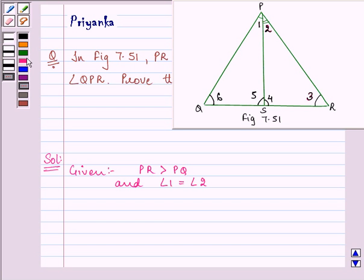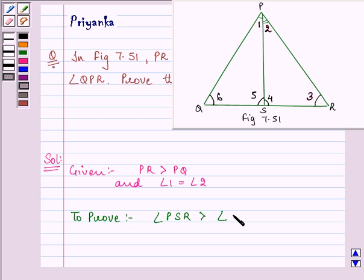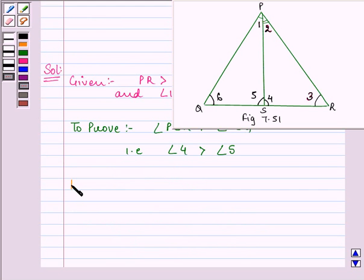We need to prove that angle PSR is greater than angle PSQ — that is, angle 4 is greater than angle 5. Let us proceed with the proof.